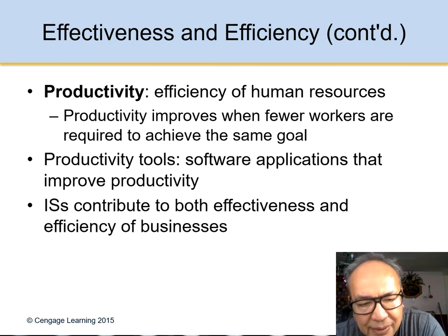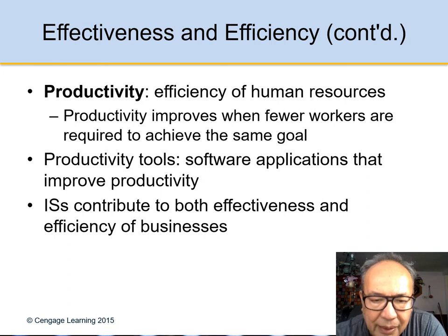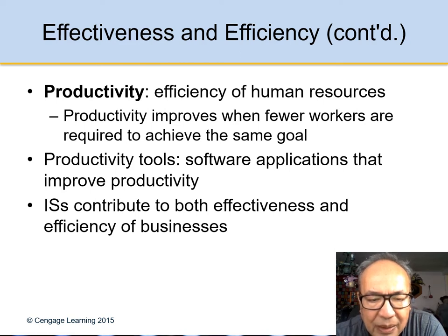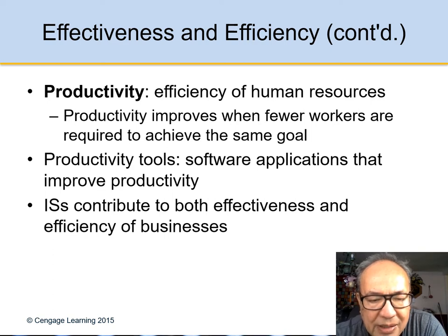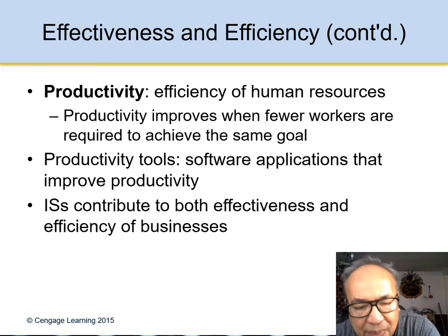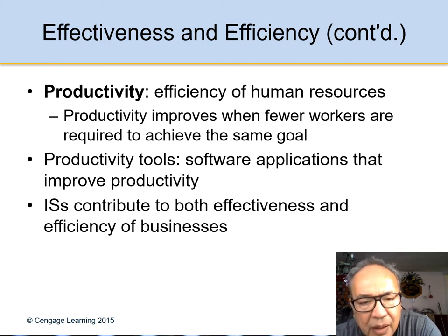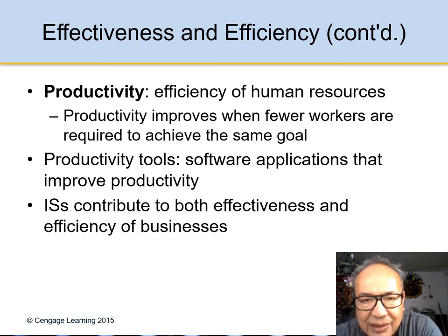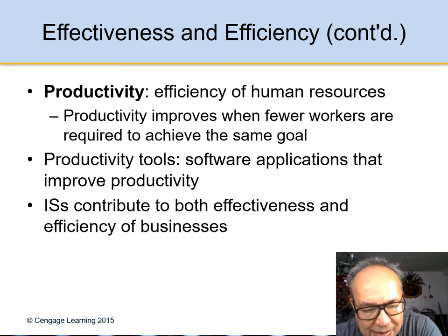The third word is productivity — the efficiency of human resources. Productivity improves when fewer workers are required to achieve the same goal. Software applications that improve productivity contribute to the effectiveness and efficiency of business. Right now, you are listening to me using PowerPoint, and I will download this to YouTube so you can watch it. It's a very effective and efficient tool for your productivity. If you have any questions, you can call me on the phone number I just gave you.